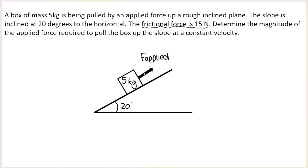Remember, if the box is being pulled up the slope, parallel to the slope, friction will act down the slope but parallel to the slope. Friction is always in the opposite direction to the direction of motion and it's parallel to the surface. The question asks us to determine the magnitude of the applied force required to pull the box up the slope at a constant velocity.